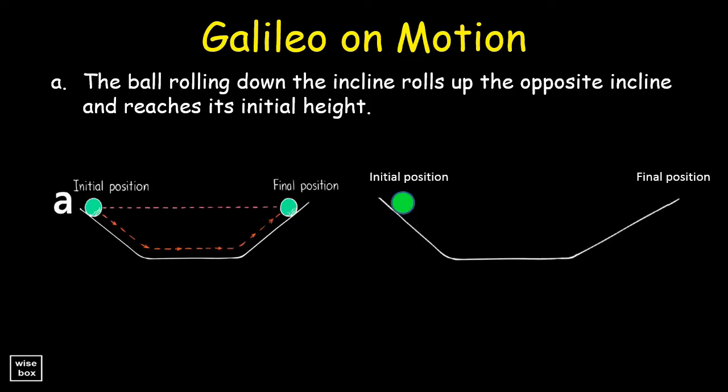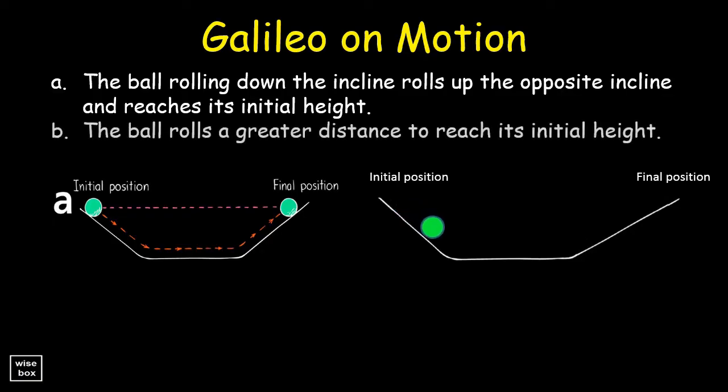And even when the second plane was longer and inclined at a smaller angle than the first plane, the ball rolling down the incline also rolls up the opposite incline and also reaches the same height as before.